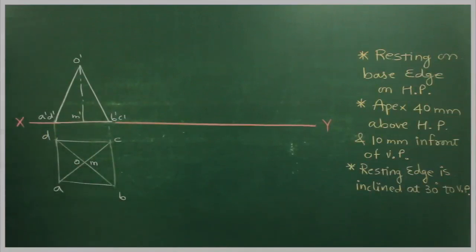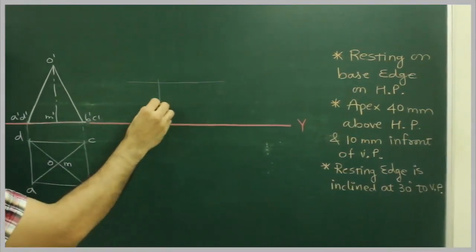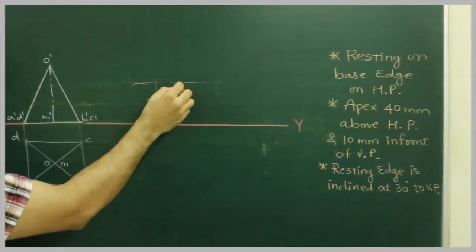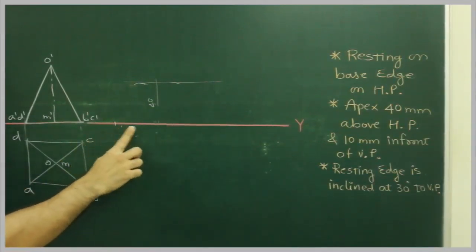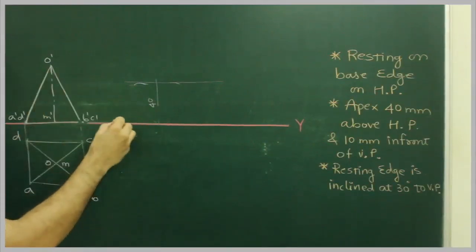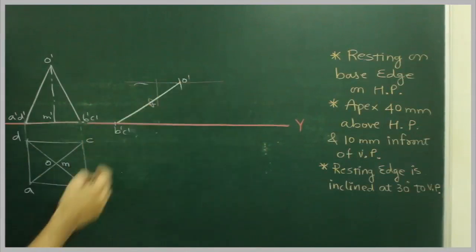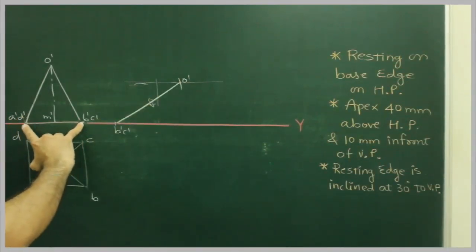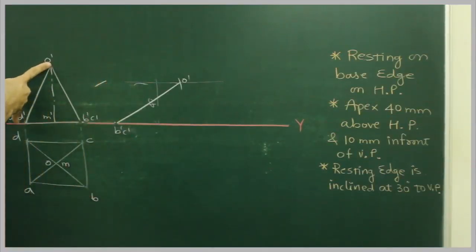Now if you see that the apex is 40mm above HP, so what we are going to do, from here we will draw a line which is 40mm above the X value, we will draw a parallel line. We will mark a point B dash, C dash, we will take B dash C dash to O dash. I am going to cut down this. Then we will take B dash C dash to A dash D dash, and then O dash to A dash D dash.